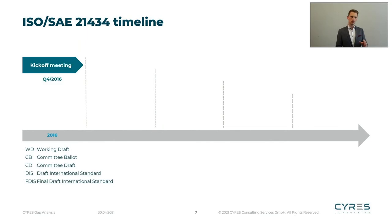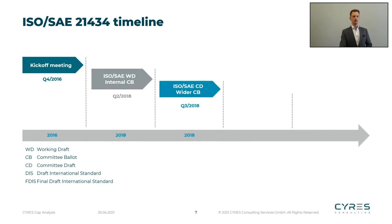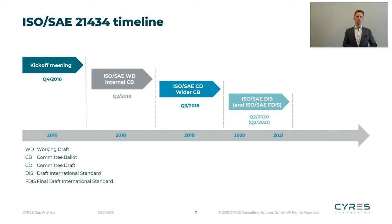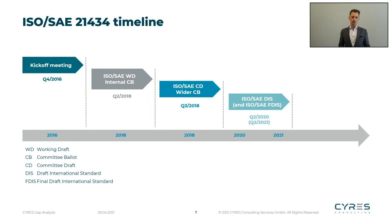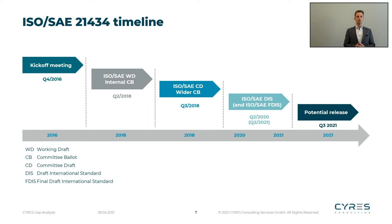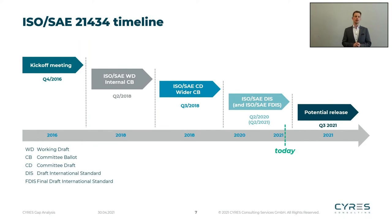It all started around end of 2016, where the standardization group came together for the first time. With different steps of development, until February 2020, when the first version was officially released — and that was also the point in time where most people got in contact with it and it spread out to companies around the world, getting more and more attention to cybersecurity. This year in Q3, there will be the official release of that standard, which then needs to apply for all new projects. Q3 2021 — it's not that much time left to prepare and to develop secure products in the future.